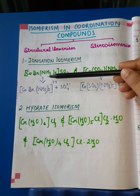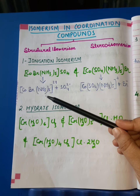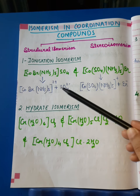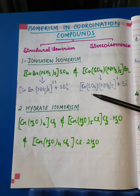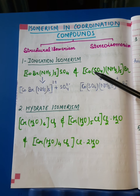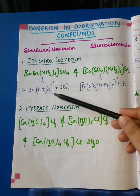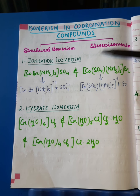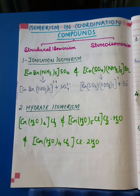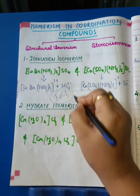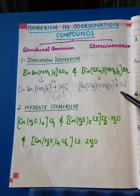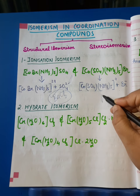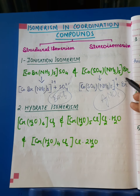But if we dissolve them in water, in solution, the first compound furnishes a positive ion as pentaamine bromido cobalt(III). Despite having the same molecular formula, the ions furnished by these two complexes are different. The solution of the first compound gives a white precipitate with barium chloride due to the presence of sulfate ions, whereas the second compound in solution gives a pale yellow precipitate of silver bromide with silver nitrate solution, due to bromide ions present in the solution.